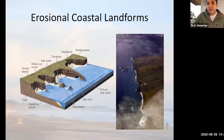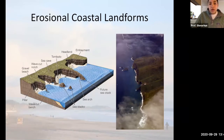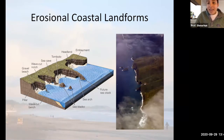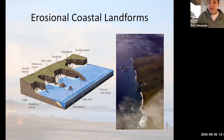Coastal erosion can produce very distinct coastline features, and we call those erosional coastal landforms. Coastal erosion is rapid in locations where you have land that juts out into the ocean, and we call that land headland features. Headland features are important because their position allows for wave action to occur at many different angles, essentially meaning that waves can attack those features from many different directions.